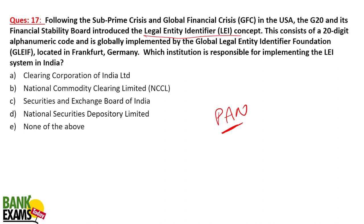To make international transactions secure, there is a Legal Entity Identifier system, which is a global legal entity identifier. It would help to identify non-individuals. It is a 20-digit alphanumeric code. In India, the Clearing Corporation of India is responsible for implementing the Legal Entity Identifier.